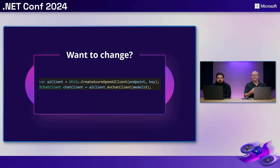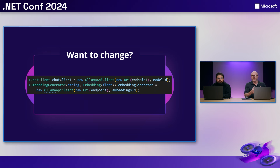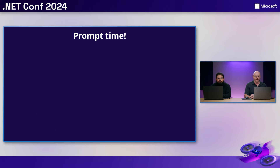If I wanted to switch from my OpenAI client to a locally run Ollama client, I would simply swap the initialization code with code that uses the Ollama version. This example uses OllamaSharp, a community-maintained SDK that works with Ollama — it's part of that ecosystem we were referring to.